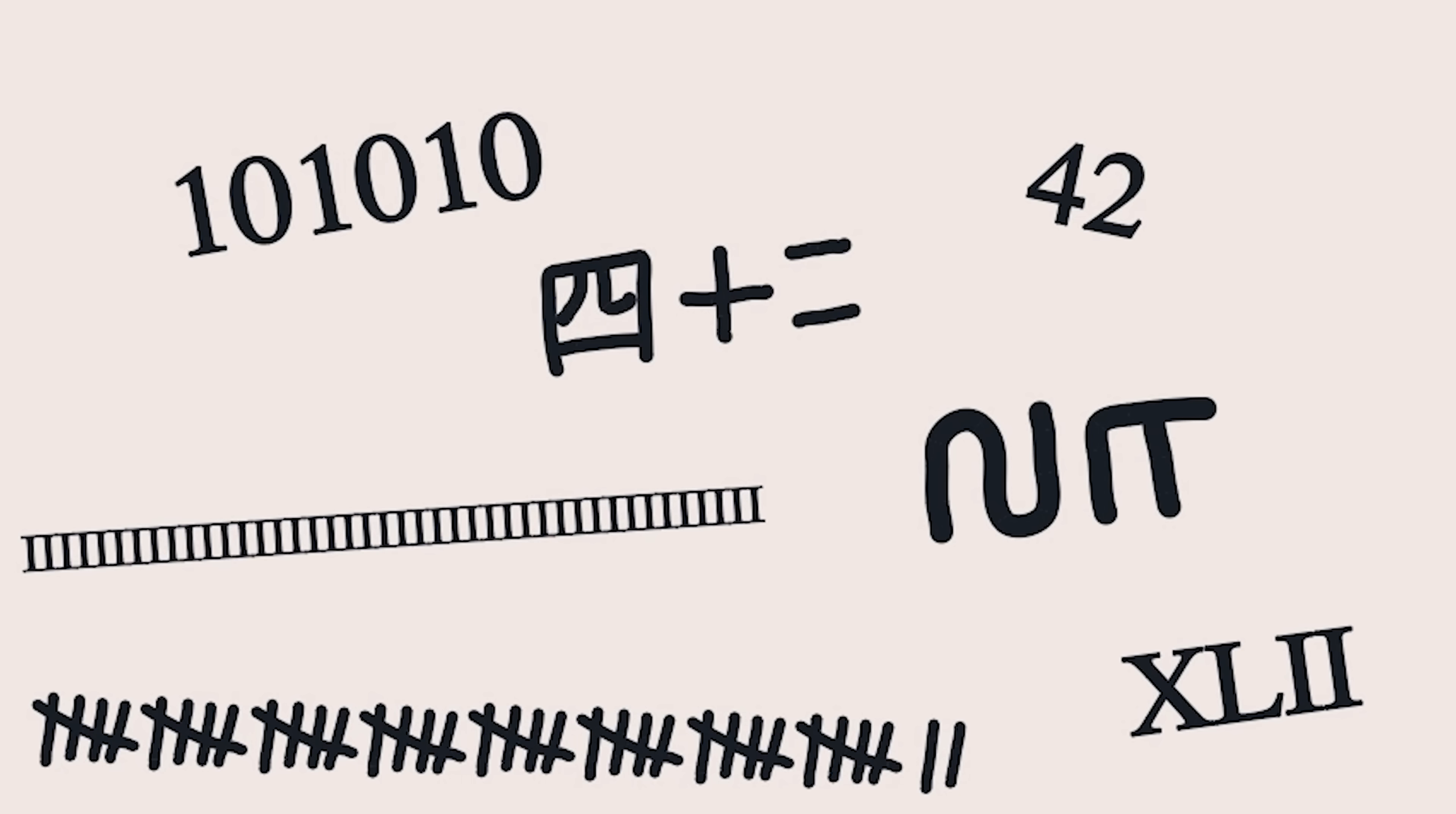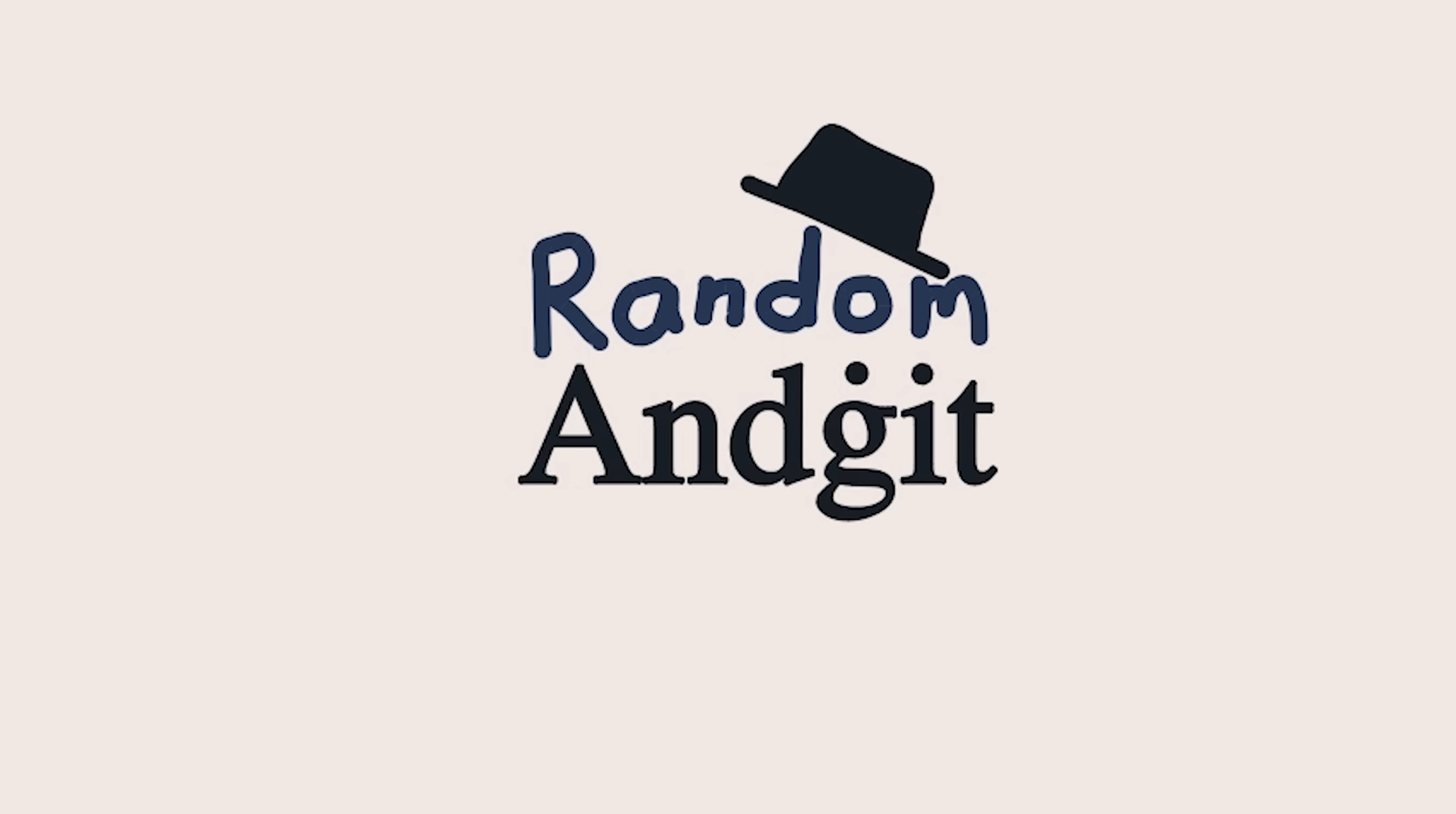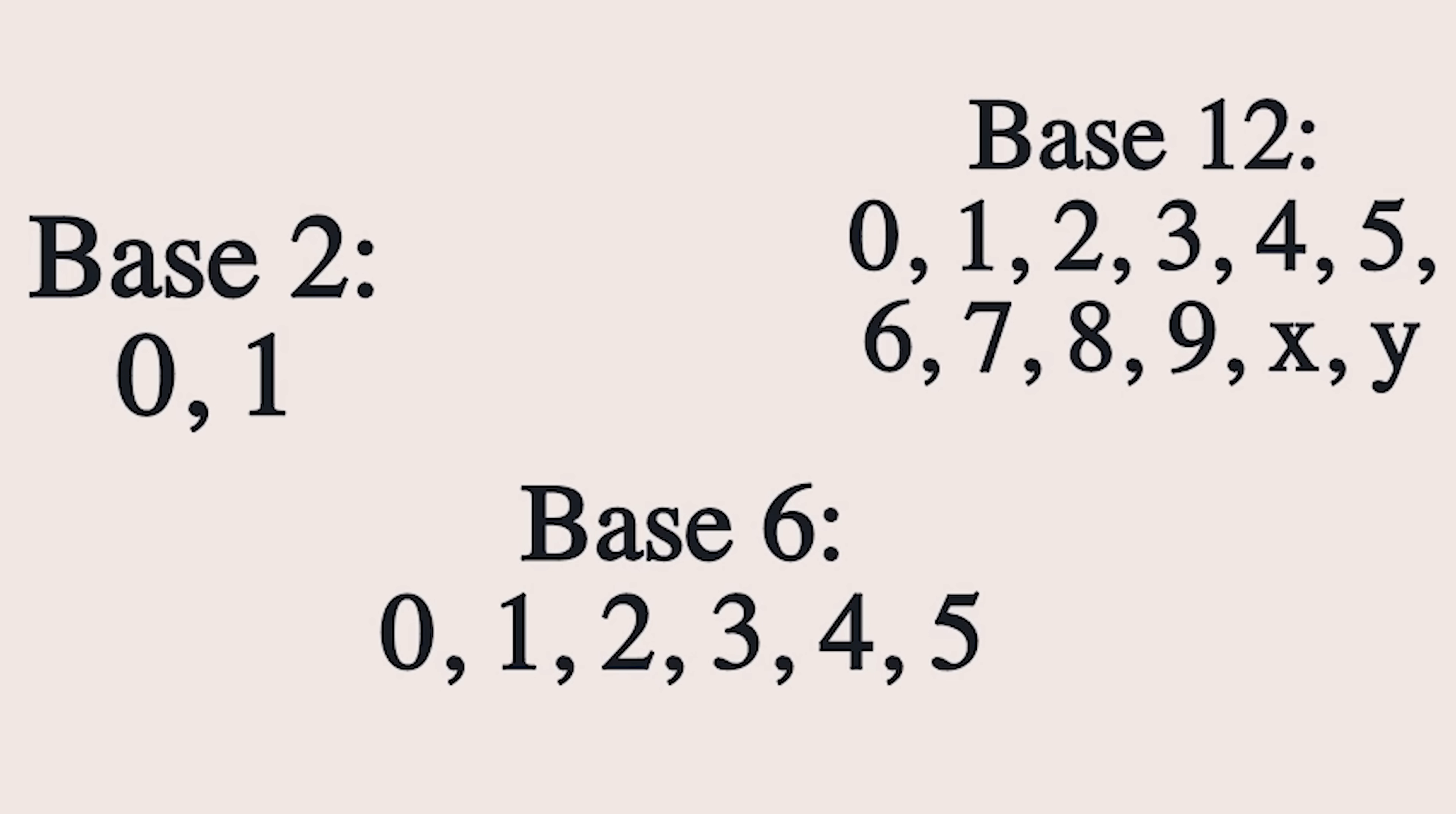But other number systems do exist, and they're more common than you might think. Let's first define exactly what we mean when we say a base. In mathematics, a base is what decides how many symbols we use before resetting to 0 and going up a digit.